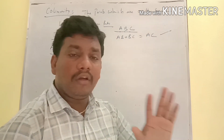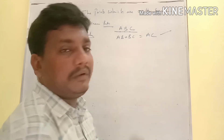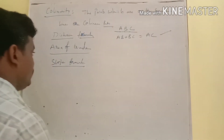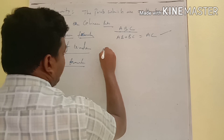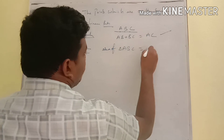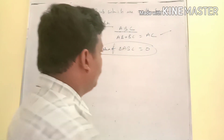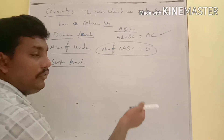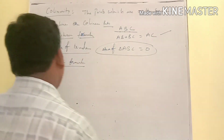The area of a triangle can never be 0 when it is actually formed. But if it is not formed — meaning the area of triangle ABC equals zero — that means all three points lie on the same line, confirming they are collinear points.